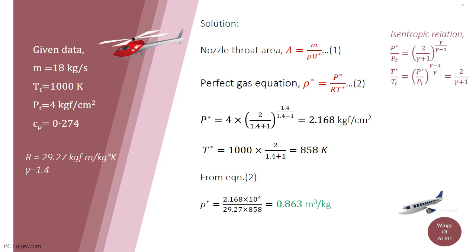From isentropic relation, we can get the temperature and pressure. For an isentropic flow of a perfect gas, several relations can be derived to define the pressure, density and temperature along a streamline.